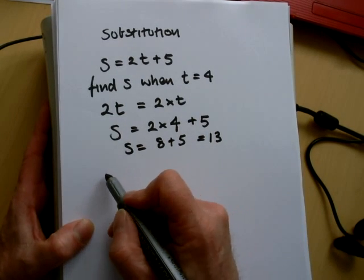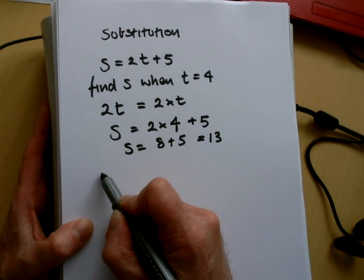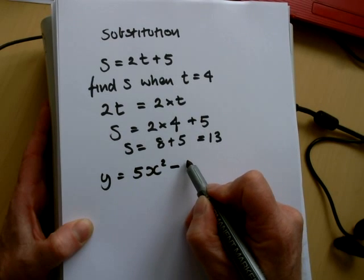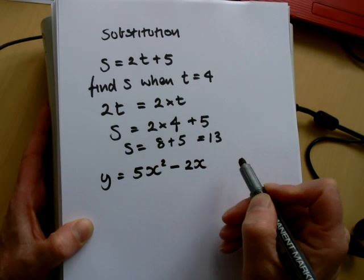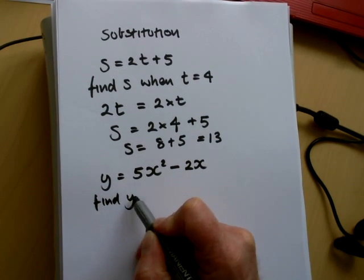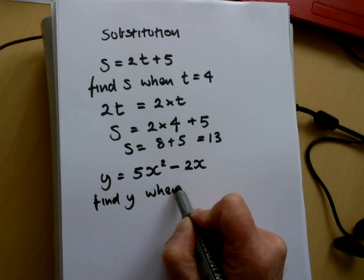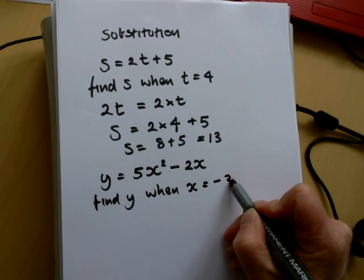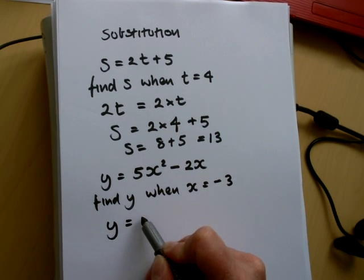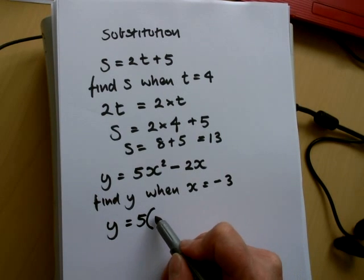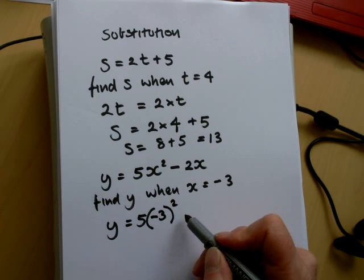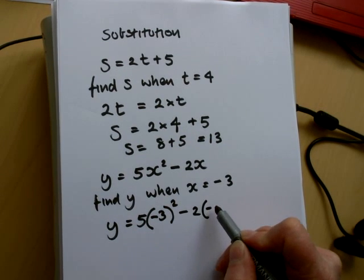So let's do a slightly more difficult one. Let's do y equals 5x squared minus 2x, and we want to find the value of y when x equals minus 3. So this is quite a bit more difficult. So y will equal 5 — substitute the minus 3 for the x. Minus 3 comes on, it's still going to be squared, minus 2 lots of minus 3.